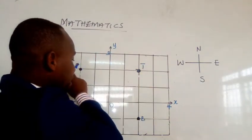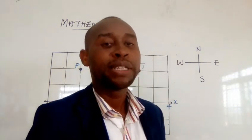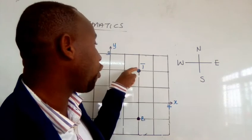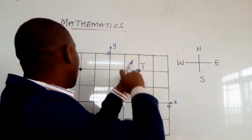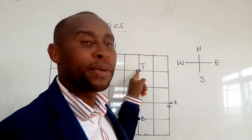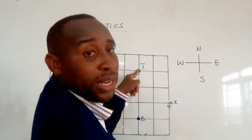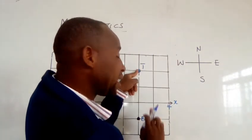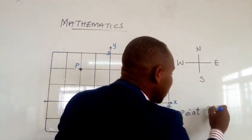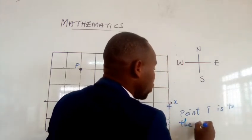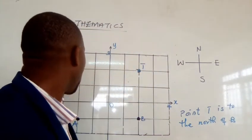We are going to use the cardinal points to describe their positions. First, let's describe the position of object C. We are going to stand at B and at P to describe point C. When you stand at B, you can see that point T is to the north of B. So we say: point T is to the north of B.